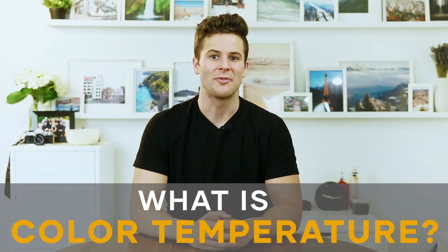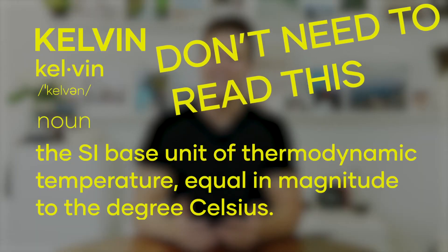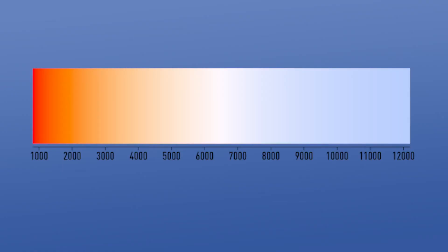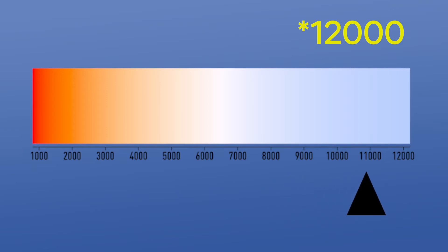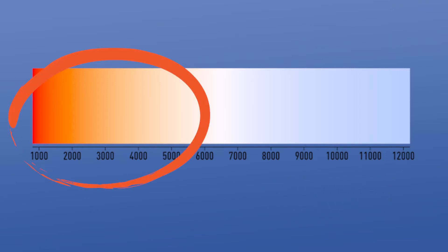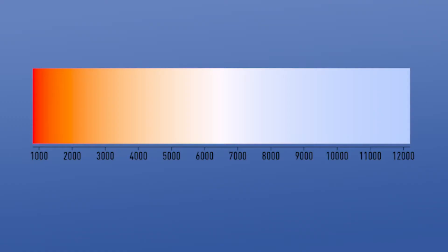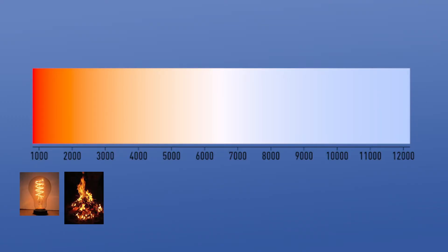Simply put, each light source has a different color or temperature, and we measure this light in Kelvin. In this graph, we can see a range from 1,000 to 10,000 Kelvin. As the Kelvin gets lower, the light available gets warmer or more orange. A few examples of this warm light include tungsten light bulbs, campfires, or candles — all sitting very warm on the Kelvin scale.